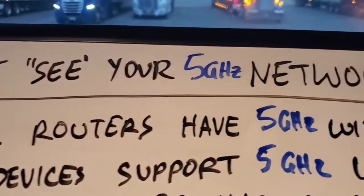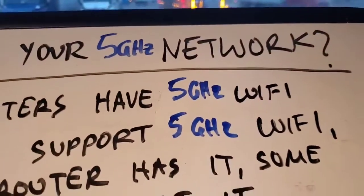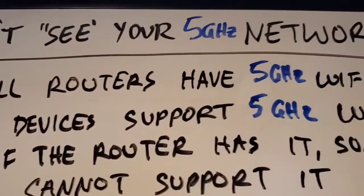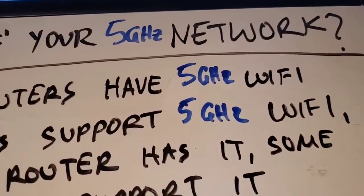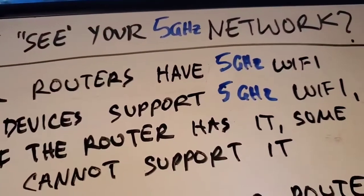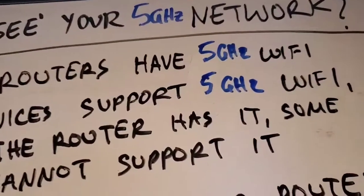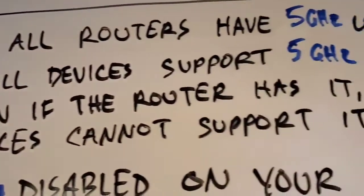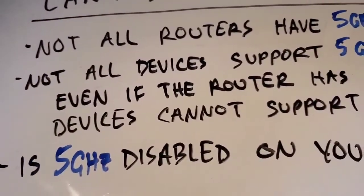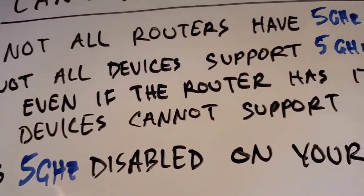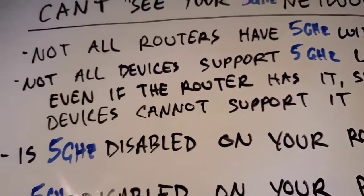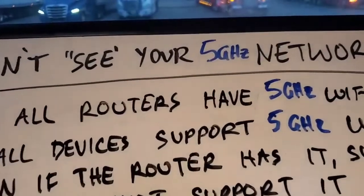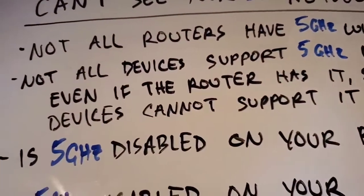If you're having issues seeing your 5 gigahertz network on your tablet, smartphone, or other device, here are some things to consider: not all routers have a 5 gigahertz Wi-Fi network, so your particular router might not even have it — you'd need to look up the hardware specs. Also, not all devices support 5 gigahertz Wi-Fi; even if the router has it, if your phone or tablet doesn't support the 5 gigahertz band, it will never see that network.